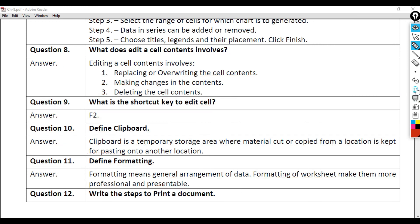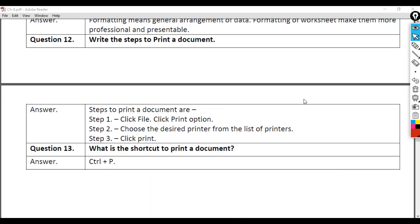Question 12: Write the steps to print a document. Answer: Steps to print a document are: Step 1 - Click File, Click Print option. Step 2 - Choose the desired printer from the list of printers. Step 3 - Click Print.